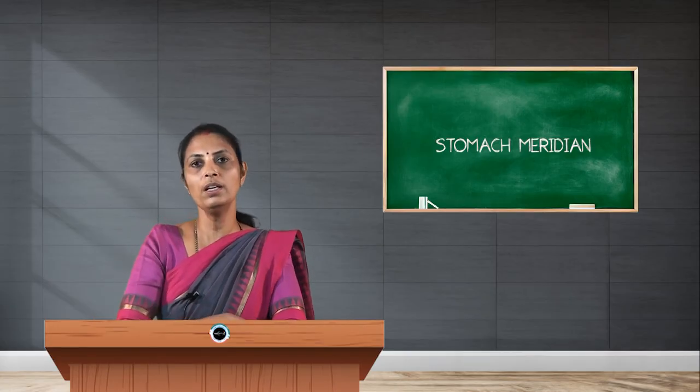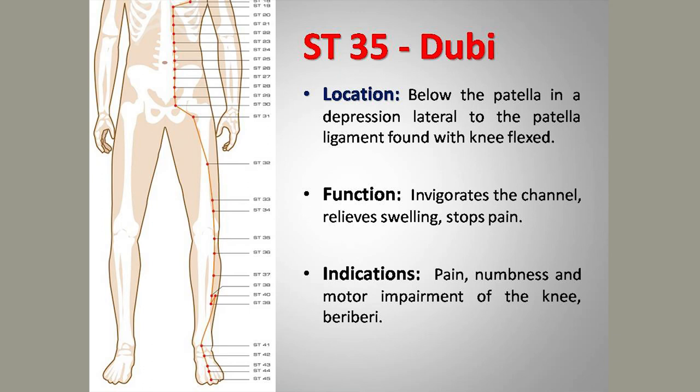Stomach 35, Dubi, is located on the knee eye, on the lateral side of the knee. It is a very important point for treating osteoarthritis of the knee.